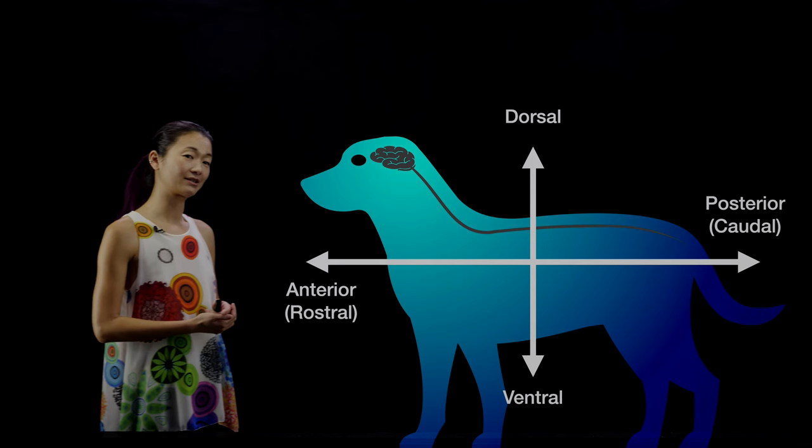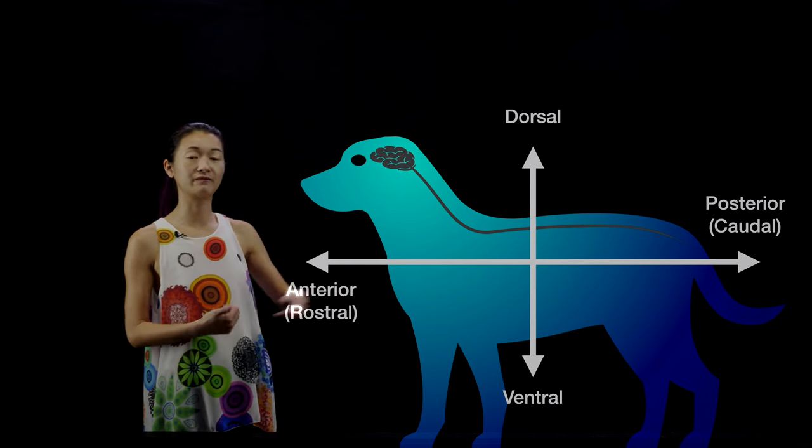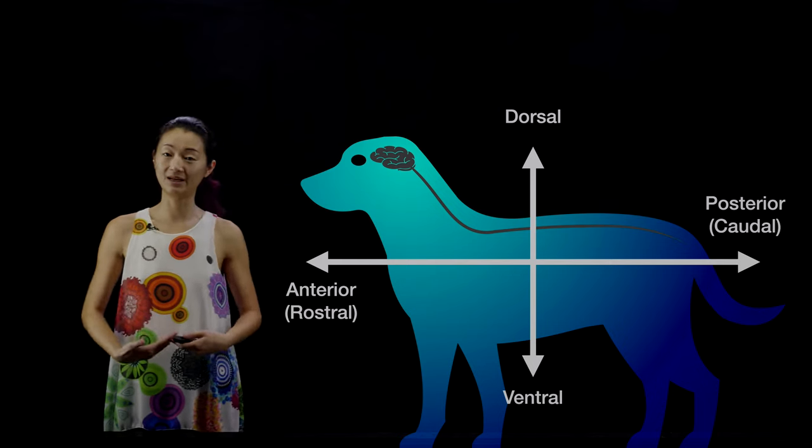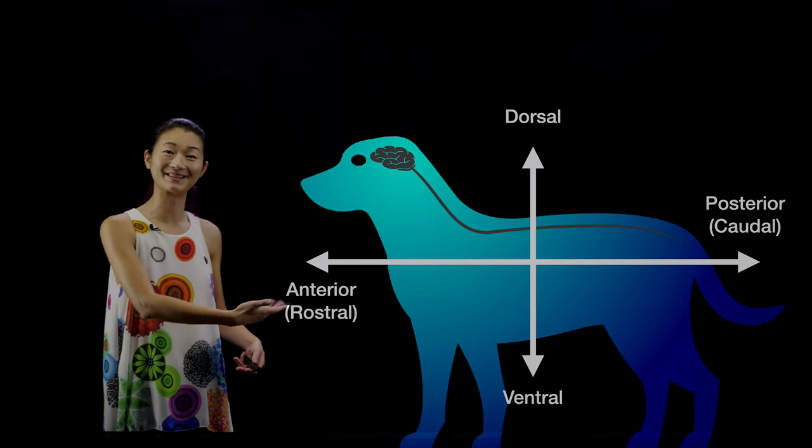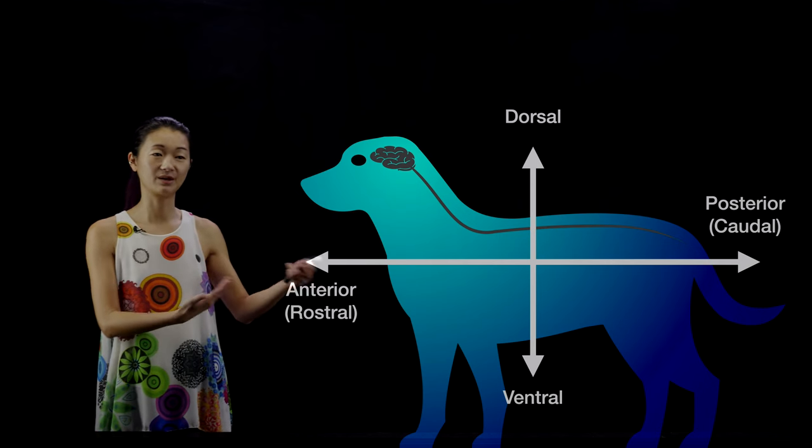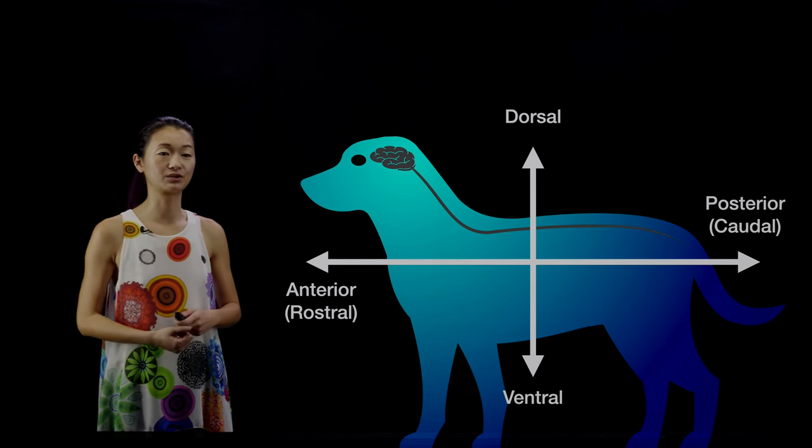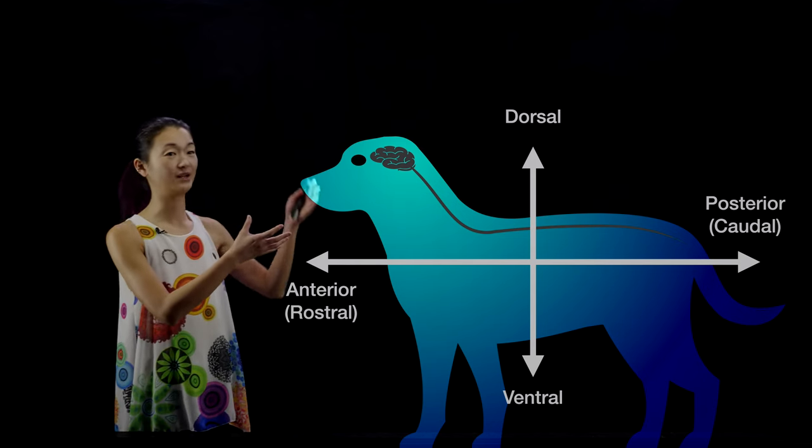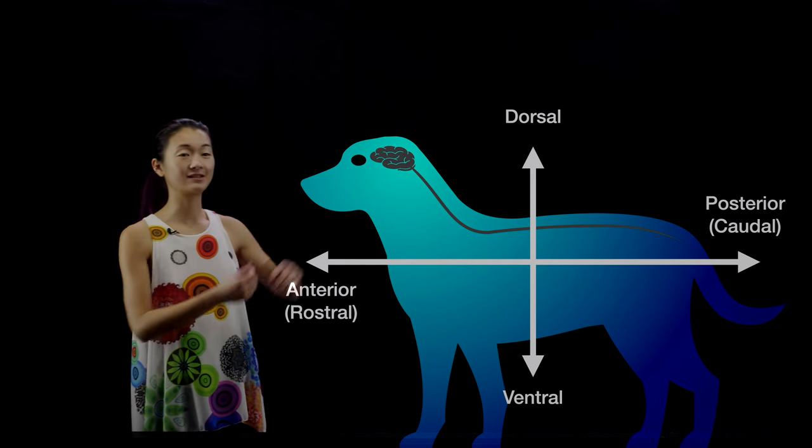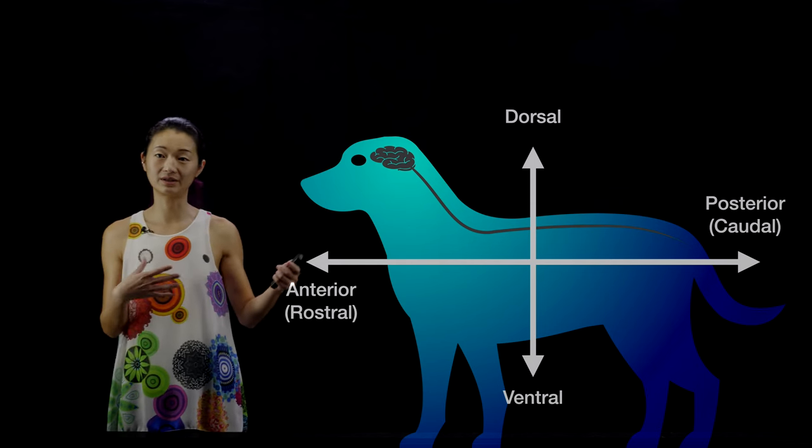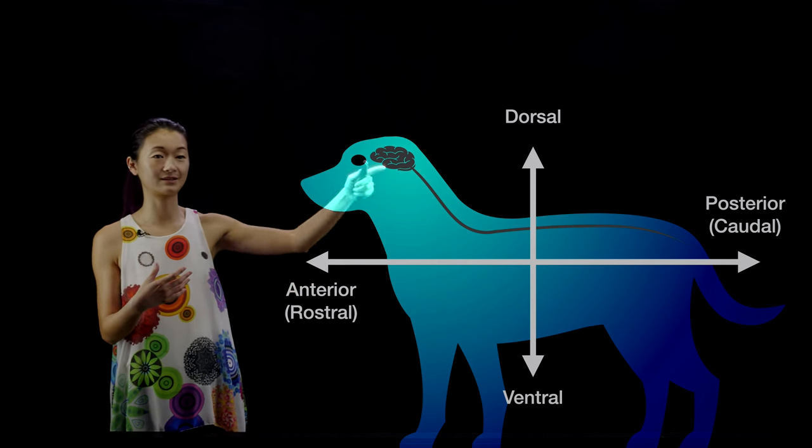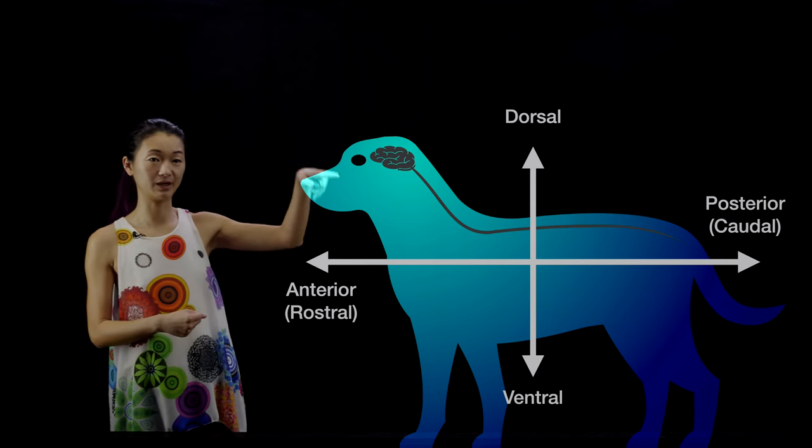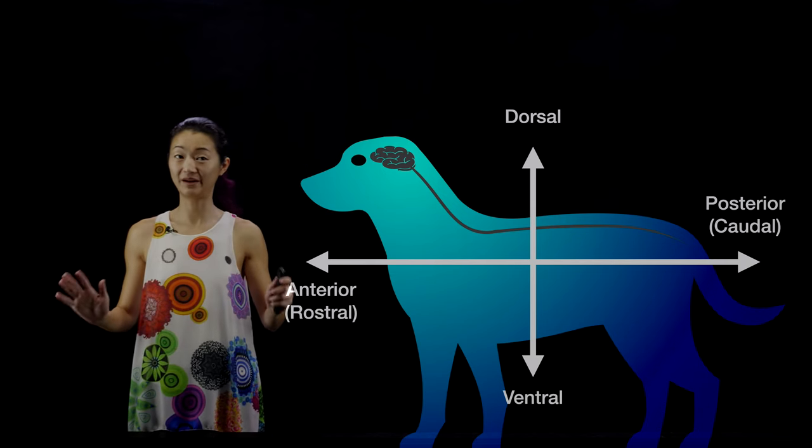Next we have orthogonal to the AP axis, the DV axis, the dorsal-ventral axis. Dorsal means back, so it's towards the back of the dog, and ventral means belly. If you think about the nervous system of the dog, we have a little brain and the spinal cord. The same thing applies to the organization and coordinate system of the brain. There's the AP axis of the brain, front to back, and also the dorsal and ventral axis of the brain, from top to bottom.